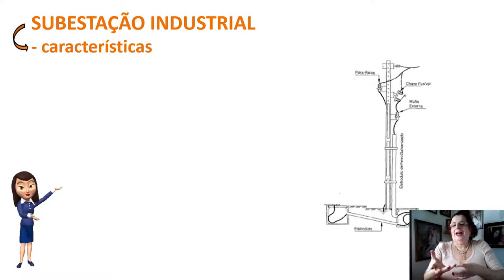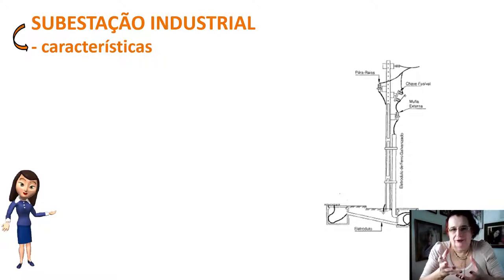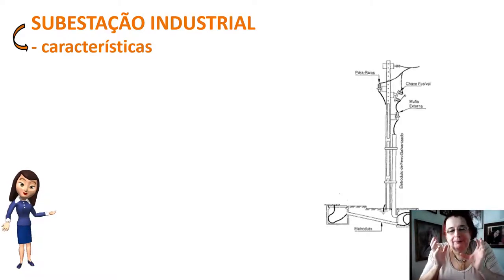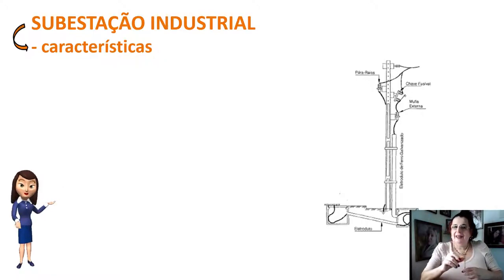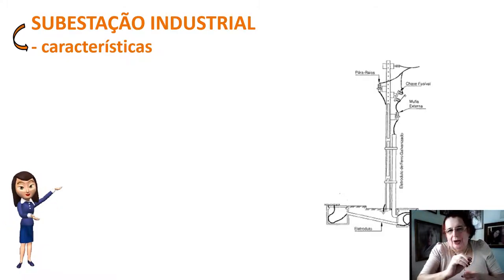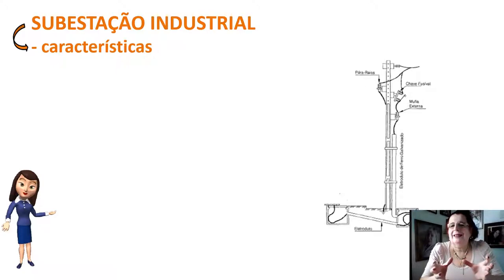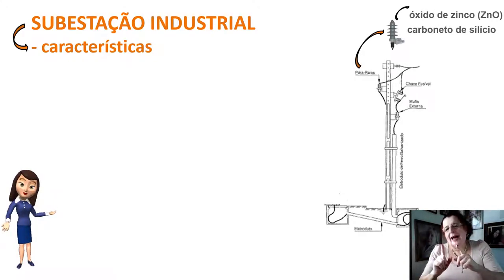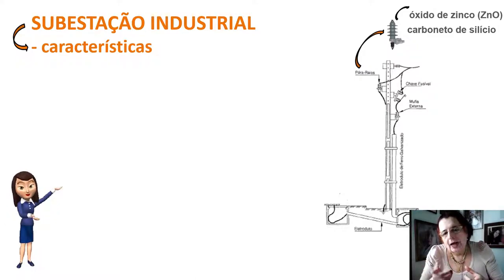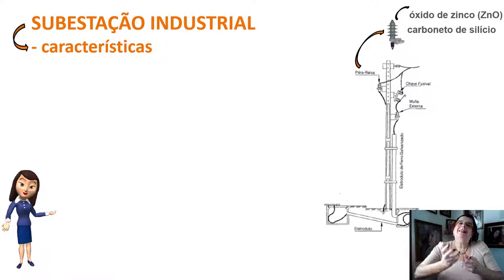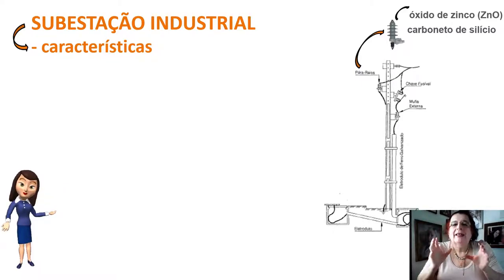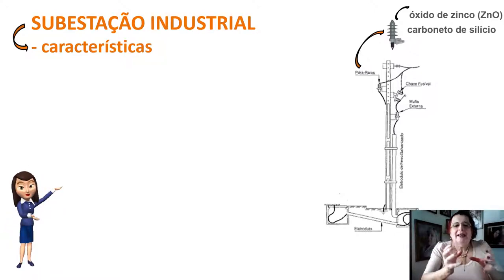As subestações industriais que recebem os 13 mil volts necessitam de características básicas para sua operação. O poste próximo à subestação industrial precisa de componentes de proteção, como o para-raios. Usualmente os para-raios são à base de óxido de zinco ou carboneto de silício, e sua função é drenar a elevada tensão provinda do arco voltaico do raio atraído pelos 13 mil volts da rede de distribuição.